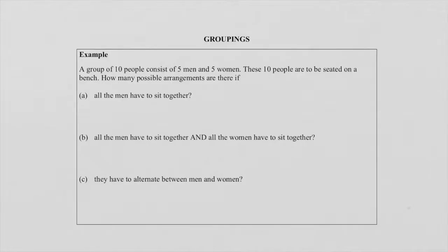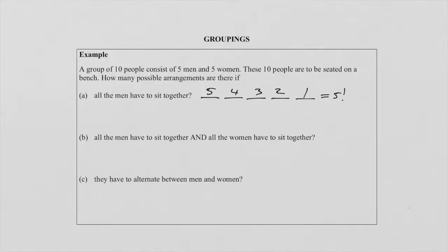If we arrange the five males, we draw five lines. Since these are people, they can't repeat. So it's 5, 4, 3, 2, 1 — which gives us 5 factorial. That handles just the males seated together, with no females allowed in between. Those five men now form one group, arrangeable in 5! ways.